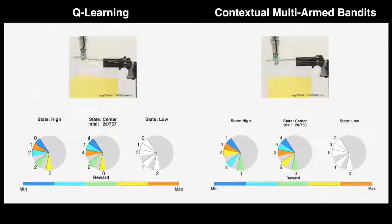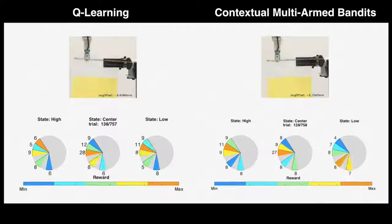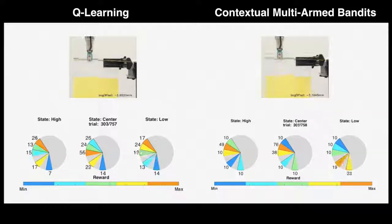Q-Learning uses a predetermined rate of random exploration of the state space. In contrast, Contextual Multi-Armed Bandits are able to balance exploration versus exploitation in order to maximize cumulative rewards given the number of actions already taken.